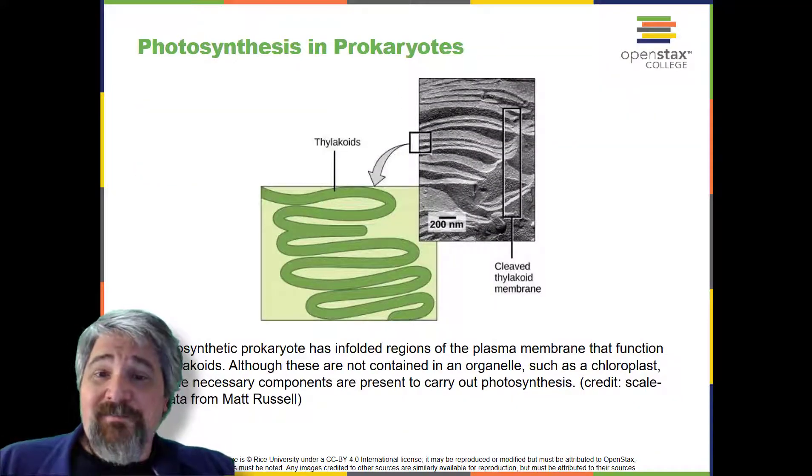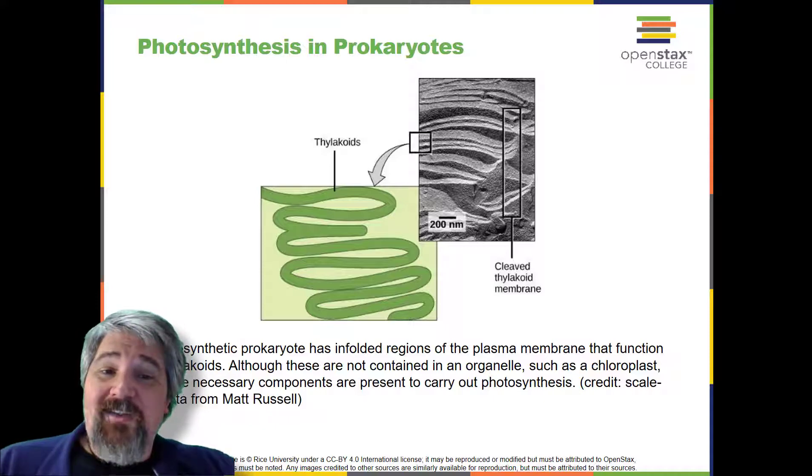Photosynthesis in Prokaryotes. The two parts of photosynthesis, the light-dependent reactions and the Calvin cycle, have been described as they take place in chloroplasts. However, prokaryotes, such as cyanobacteria, lack membrane-bound organelles.